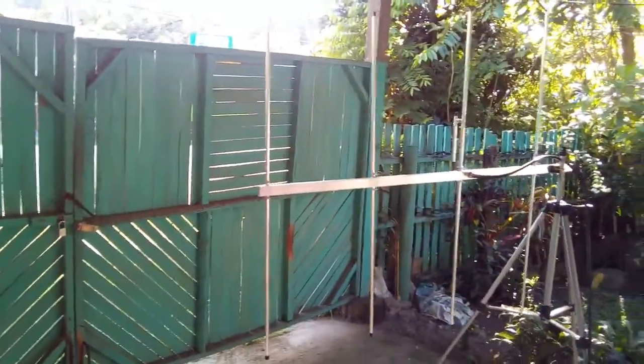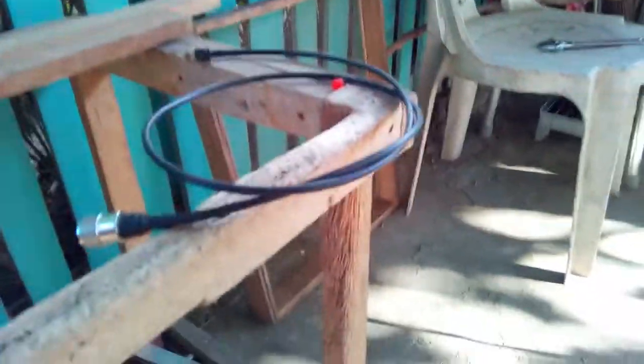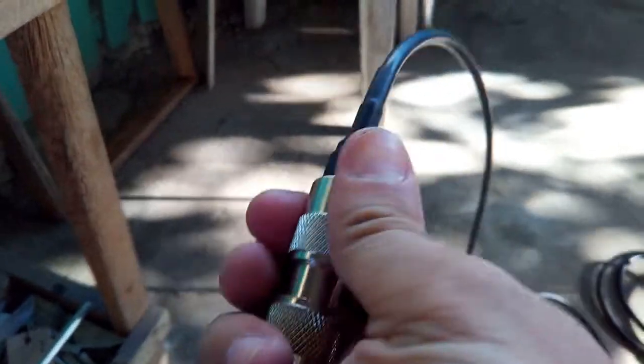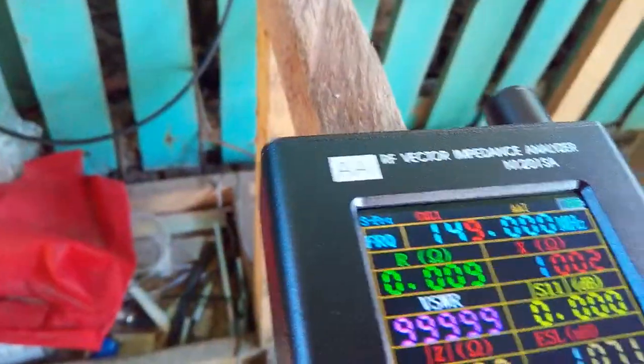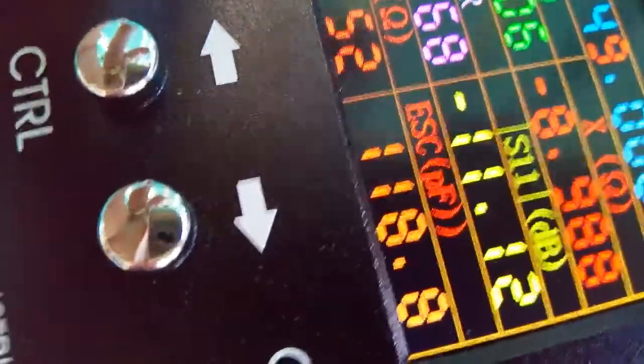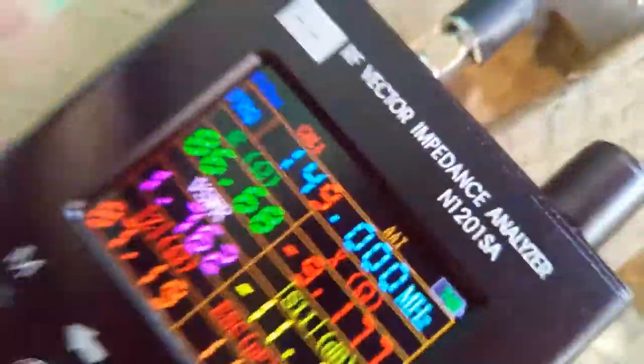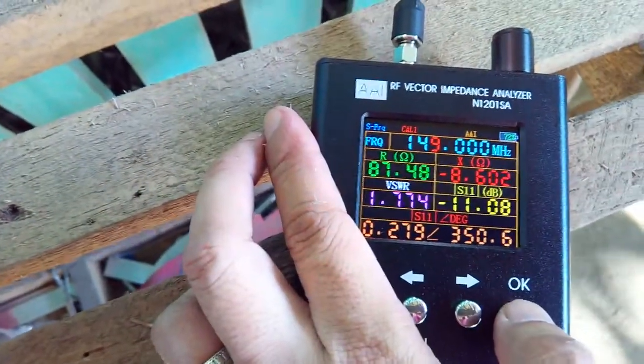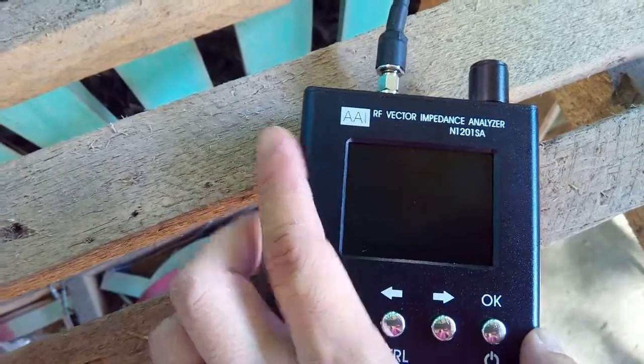This is the coaxial cable connected to the antenna feed point of the four element Yagi. So let's connect this to the other port of the impedance analyzer. I will be turning it up first just in case and turning it on.